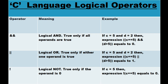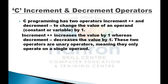Logical NOT (!): true only if the operand is zero. For example, if c equals 5, the expression !(c == 5) — since c == 5 is true (non-zero), applying NOT will evaluate to zero.